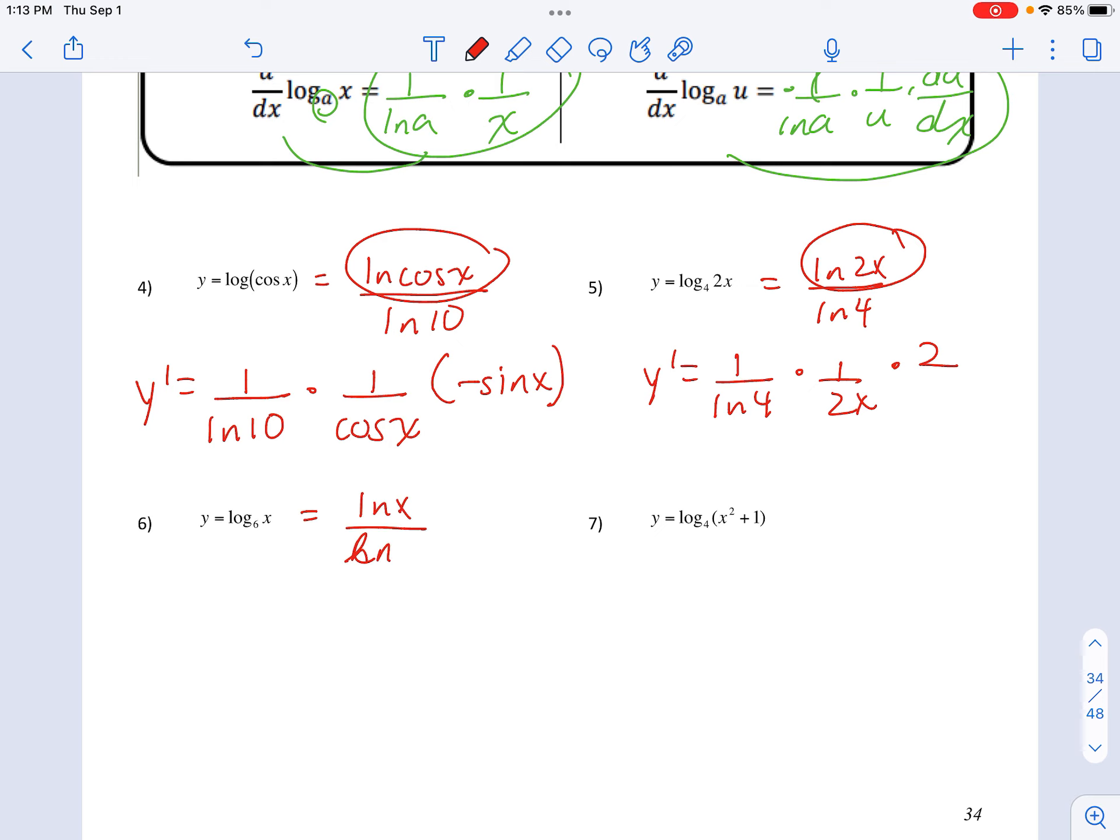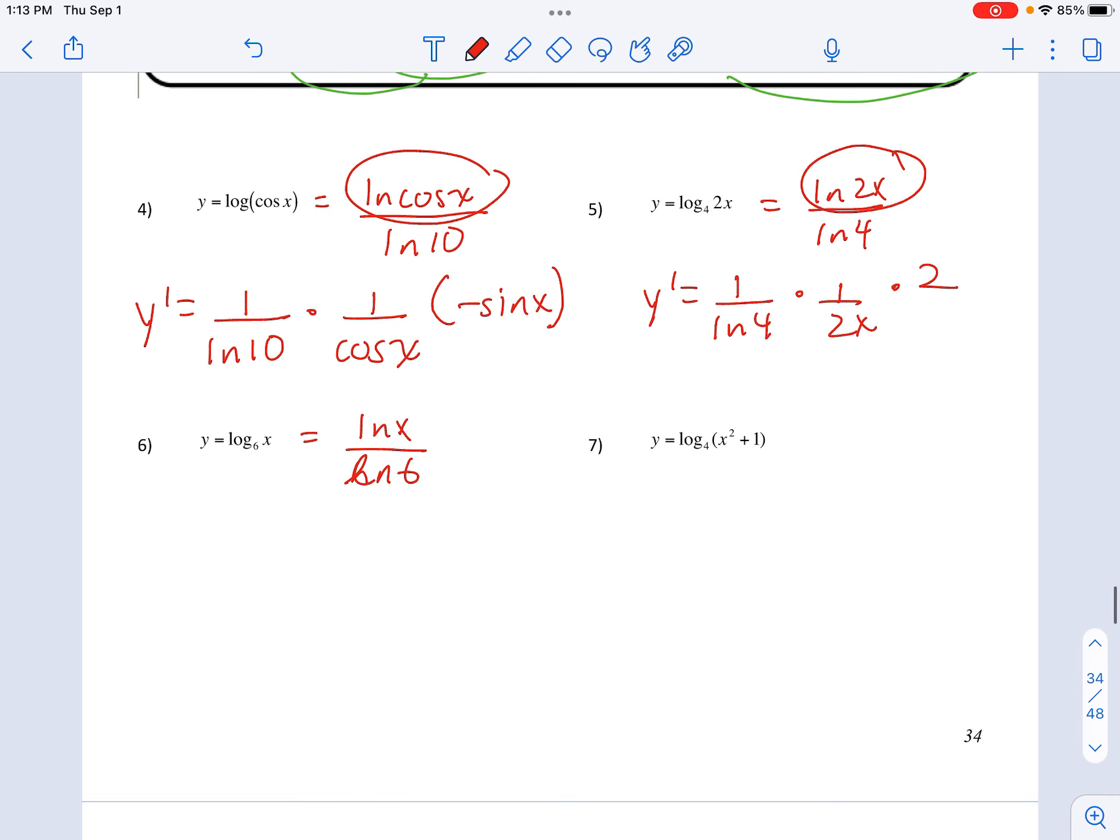This we can rewrite like this. Derivative is 1 over natural log of 6. Gets pulled out. Times 1 over x.